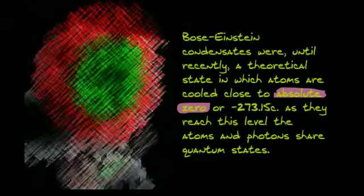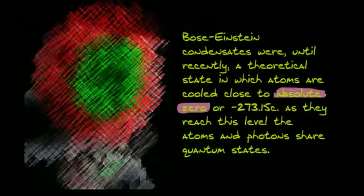The first state of matter that we'll be discussing is the Bose-Einstein condensate. Now these were until recently a theoretical state in which atoms were cooled to close to absolute zero. In this case, the temperature that was achieved that was observable was negative 273.15 degrees Celsius. As they reach this level, the atoms and photons are able to share quantum states. Now if you imagine the image we had from when we were looking at the solar system and they had that cloth with the big indentation that was caused by the gravity of the sun, this is somewhat similar to that but just on a microscopic scale.